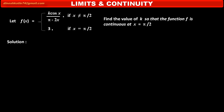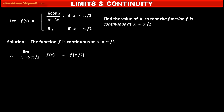Solution. It is given that the function f is continuous at x = π/2. Therefore, by the definition of continuity, we can write: limit as x tends to π/2 of f(x) equals f(π/2). When x is not equal to π/2, f(x) = k·cos(x)/(π − 2x), and this limit equals f(π/2), which is given as 3.